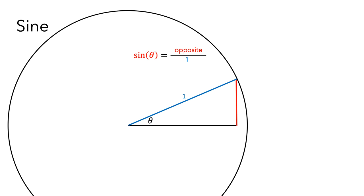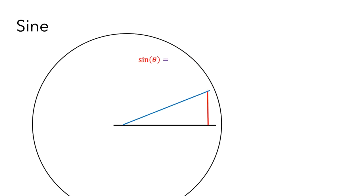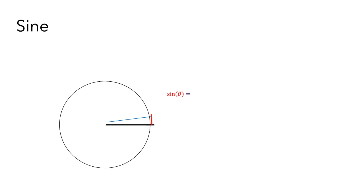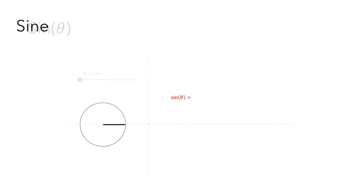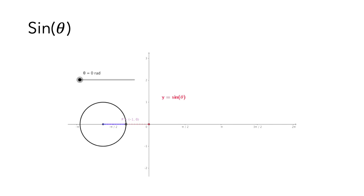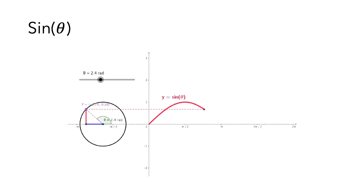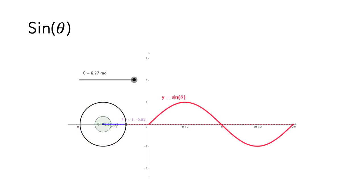Let's shrink this down so we can add coordinate axes and make a graph of the values of sine. Now, let's add some coordinate axes. The length of the side opposite the angle will be the y-coordinate of the point P. Let's increase the angle theta and graph the y-values we get. This is a graph of the function sine of theta.